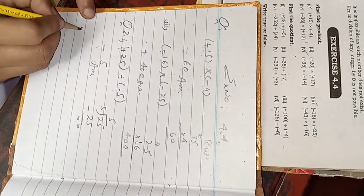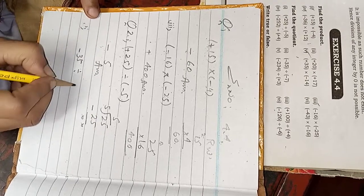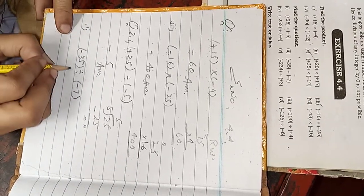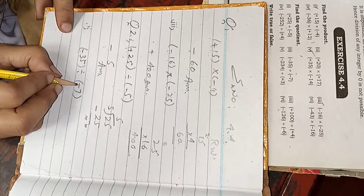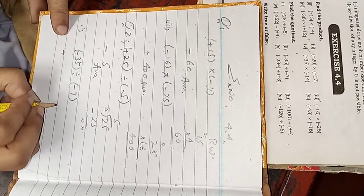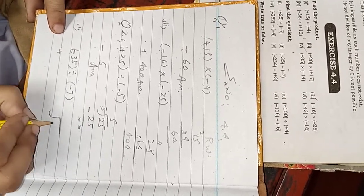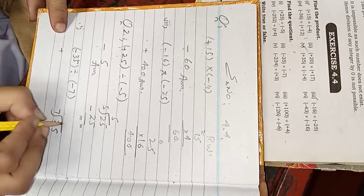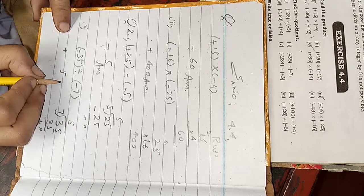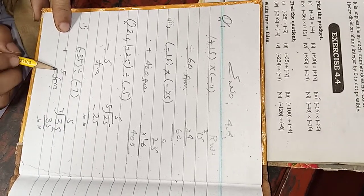Then we apply the second question. Minus 35 divided by minus 7. Here we have the same sign. Minus minus equals plus. 35 divided by 7. You know very well seven fives are 35. Answer is positive 5. That means quotient is 5.